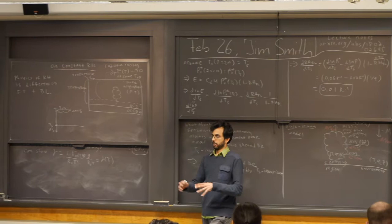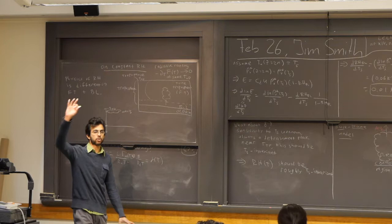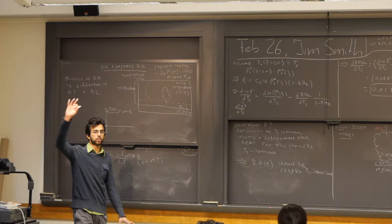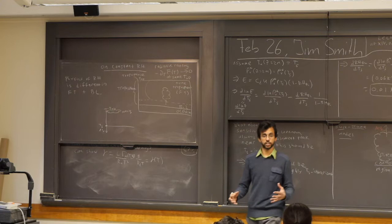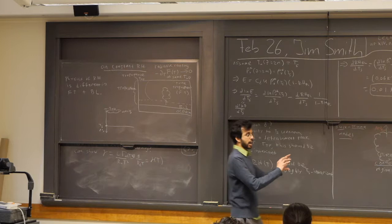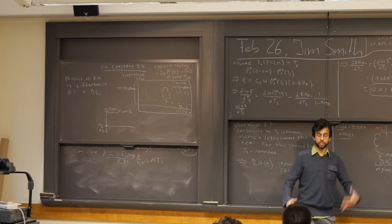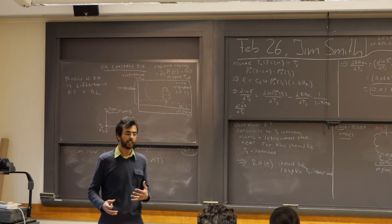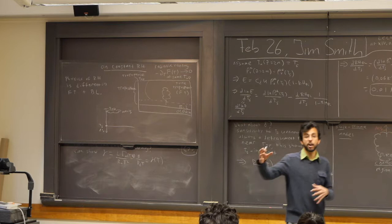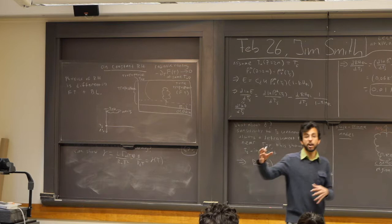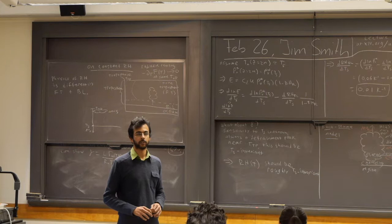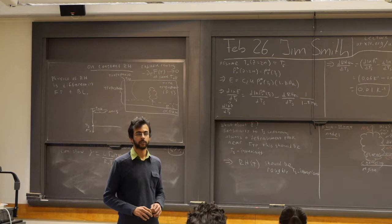A student asks about the length scale of detrainment. It's telling you how far you have to go before your Q_V_star — your saturation specific humidity — declines by a factor of 1/e. The equation has two length scales: gamma comes in because you're taking a dz derivative of Q, writing Q as RH times Q_star, and dividing by Q_star gives you d(log Q_star)/dz, which is gamma. T and P are assumed known, Q_star is a function of T and P, and Q is written as RH times Q_star — so RH is the unknown we're solving for.